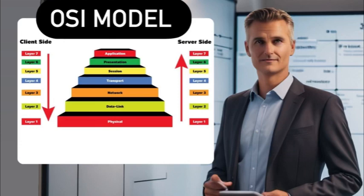The OSI model actually serves like a roadmap — a map that helps you understand how data flows through a network. Think of it like a foundation of networking knowledge, which will help you unravel the intricacies of communication between devices. Imagine the OSI model like a stack of seven layers, each responsible for a very specific aspect of network communication, from physical connections to application-level data exchange.